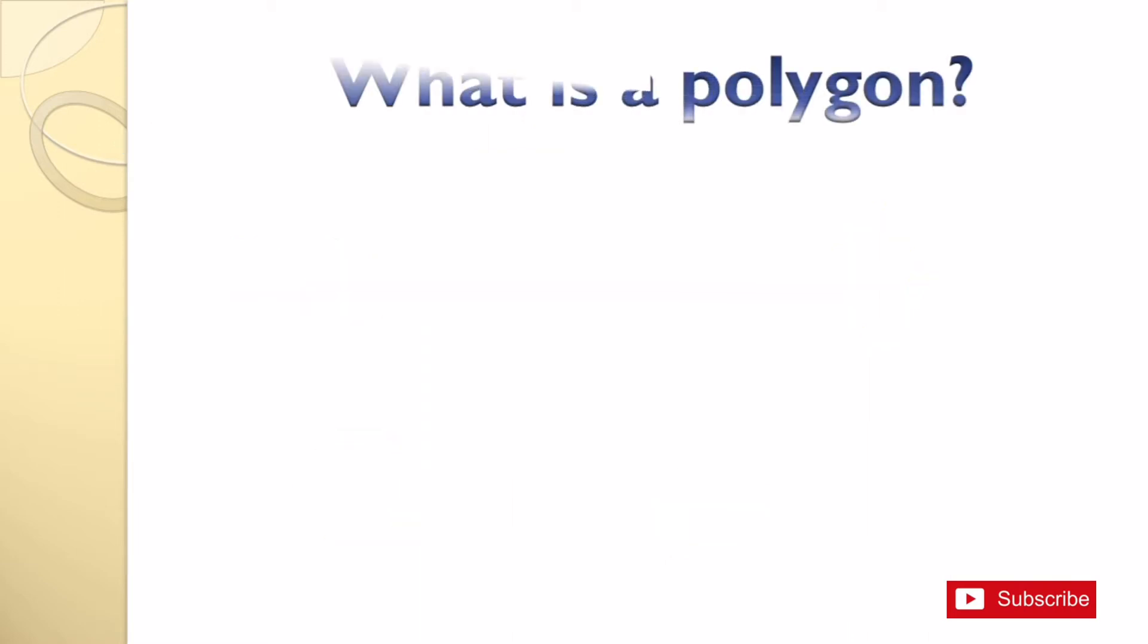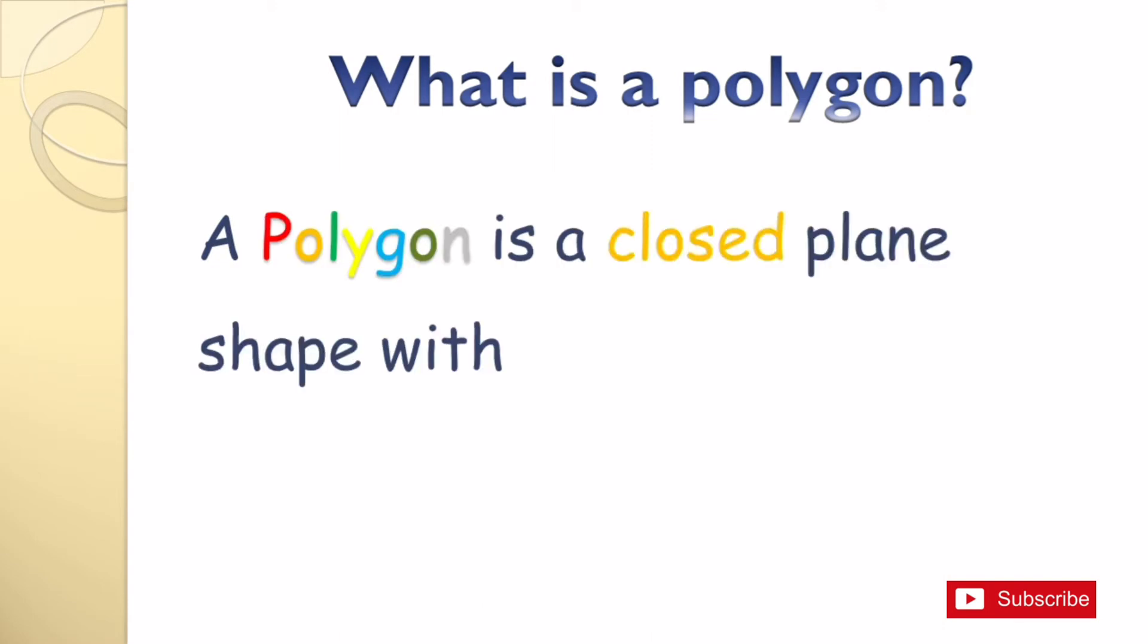What is a polygon? A polygon is a closed plane shape with three or more straight sides.